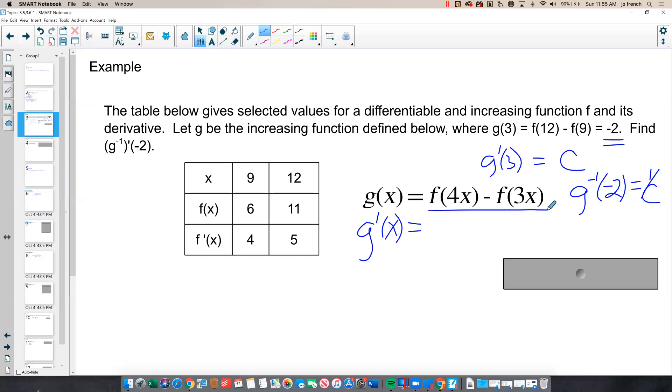Derivative of f of 4x is going to be f prime, the derivative of the outside, leave the inside alone, times the derivative of the inside, the derivative of 4x. And then my derivative of f of 3x is going to be f prime, leave the inside alone, 3x, times the derivative of the inside, or 3.